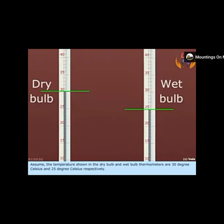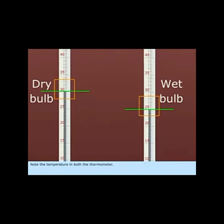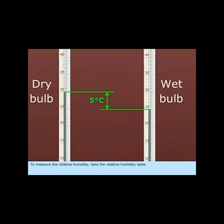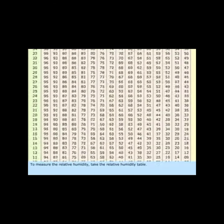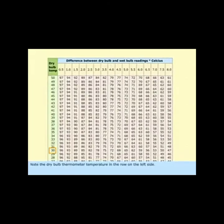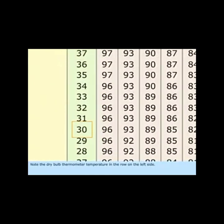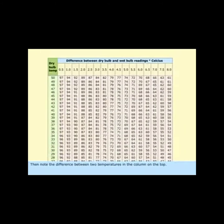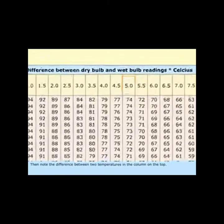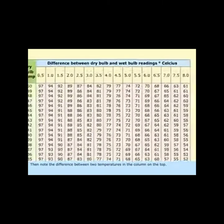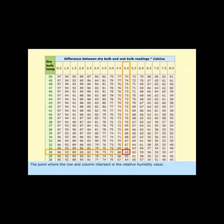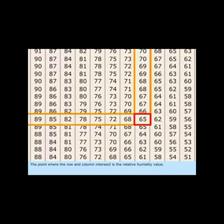Let's take an example where the temperature shown in the dry bulb and wet bulb thermometers are 30 degrees Celsius and 25 degrees respectively. Note the temperature, then find the difference and note it too. To measure the relative humidity, get the relative humidity table and note the dry bulb thermometer temperature in the row on your left side, and the difference between the temperatures in the column at the top. The point where the row and column intersect is the relative humidity value — in this case, it is 65 percent.